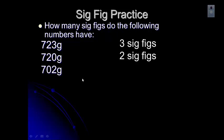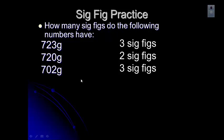Try this one. This one has three sig figs. You can see that the zero is between two significant digits, so the zero is sandwiched — that makes it significant.